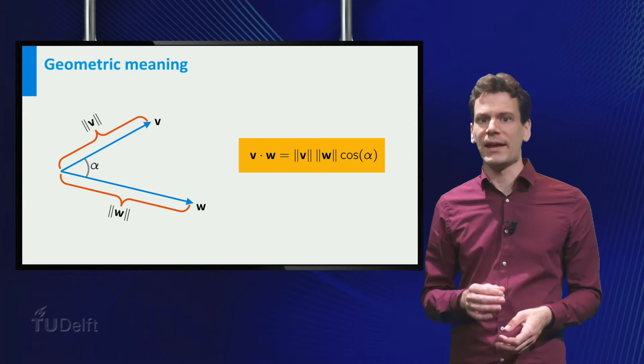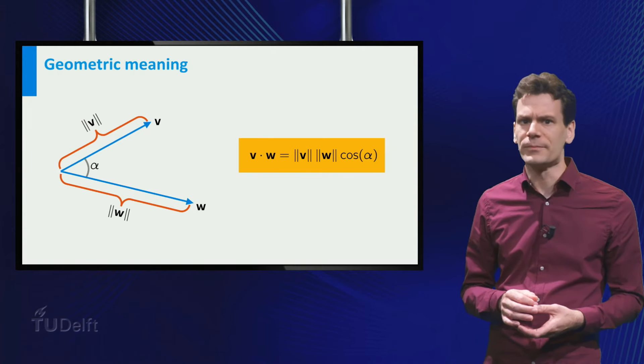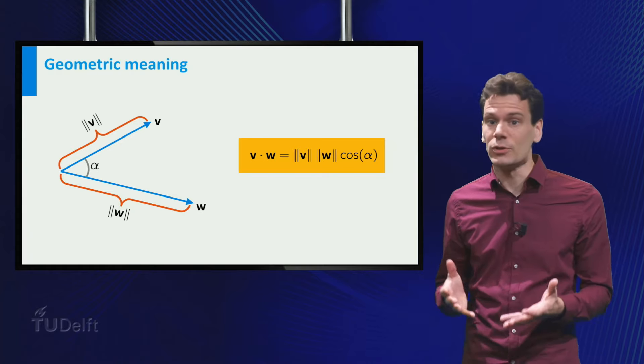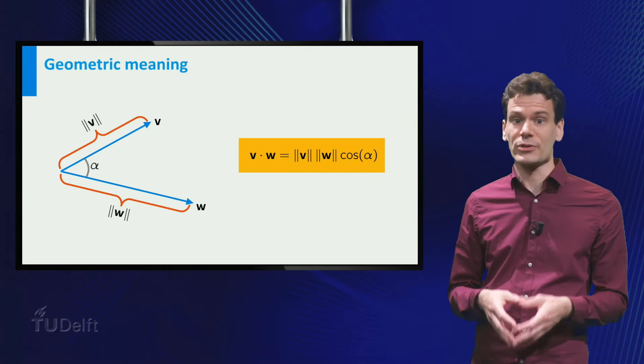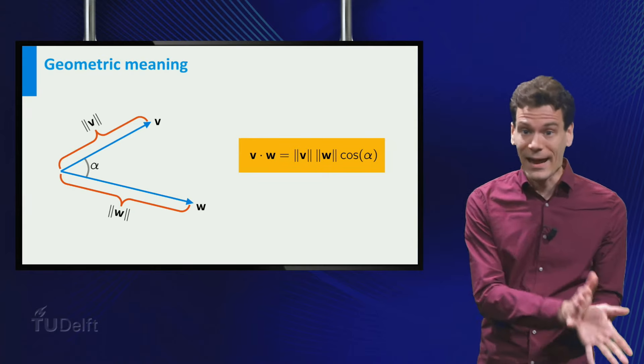Remember that the norm of a vector is the length of the arrow. I will not prove this formula here, but let's think about it for a moment. You see that the dot product can be expressed in terms of geometric properties of the vectors, their norms and the angle between them.